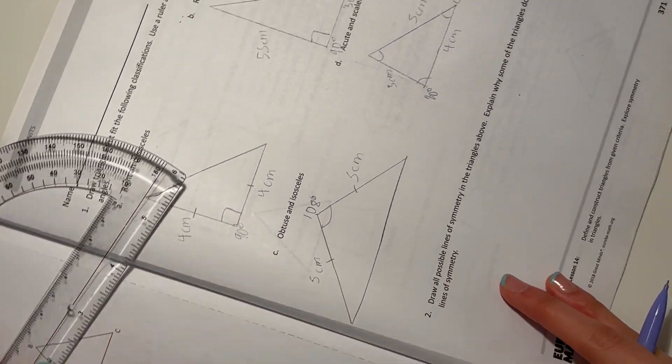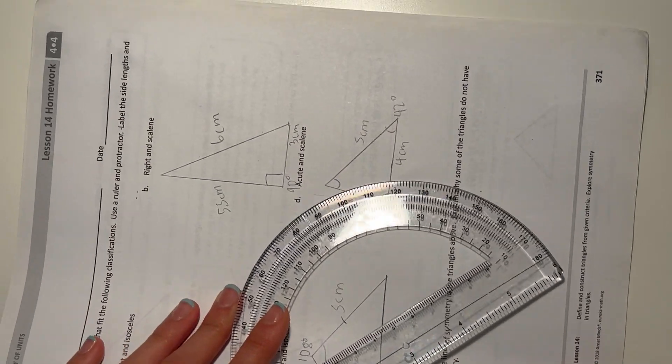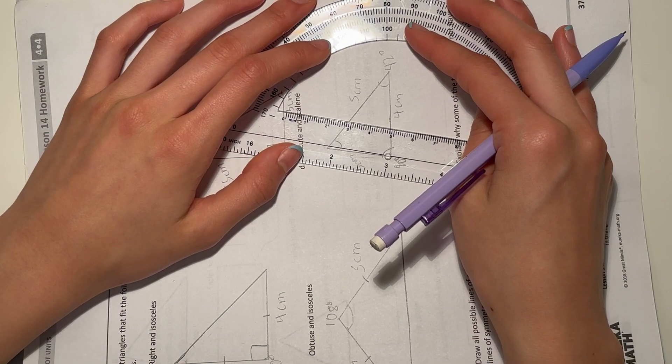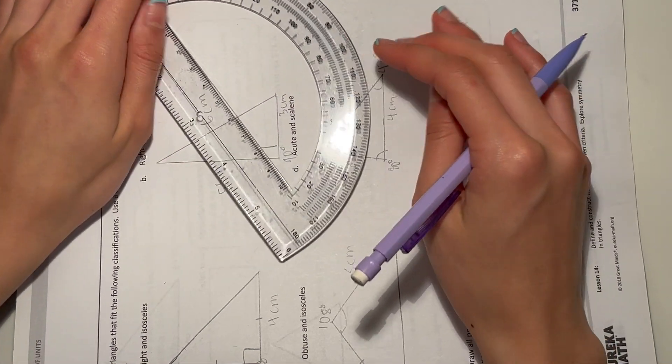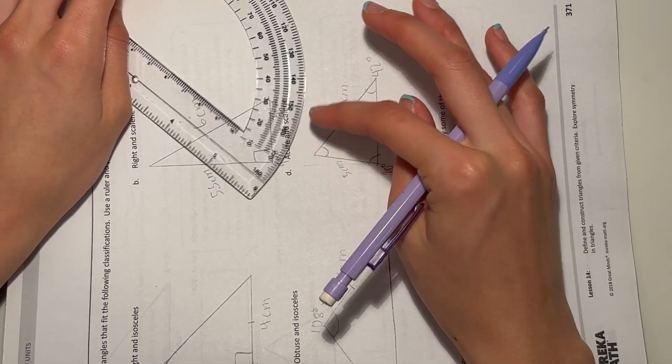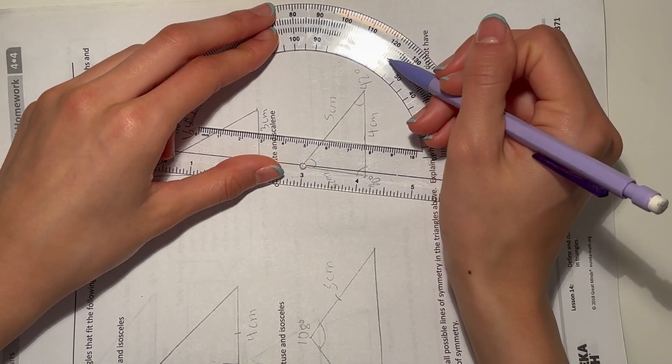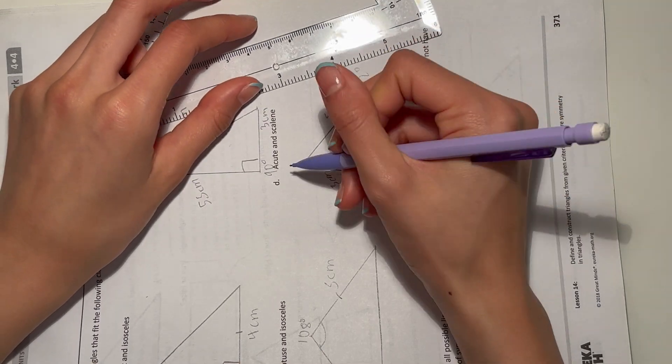And this angle is acute, so this one is about, I'd say about 40, 42 degrees. And our last one... okay, I'm gonna tilt it. Let's see, wait, which angle are we measuring? This angle. All right, this angle is, I'll just say 60 degrees.